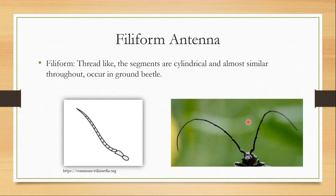The next type is the filiform or thread-like antennae, where the segments are cylindrical and almost similar throughout. This occurs in ground beetles, cockroaches, etc.